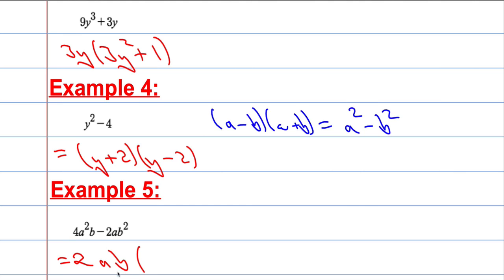What will I have to multiply 2ab by to make 4a squared b? It will have to be 2a, because 2a times 2ab gives me 4a squared b. And then a minus sign here. And what will I multiply this guy by to make this guy? Well, I've just got to multiply it by b. And that's the job done.